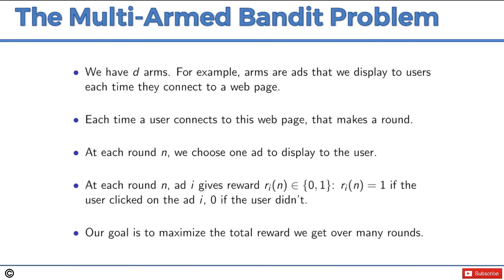A quick summary of the multi-armed bandit problem: we have d-arms. Arms are ads that we display to users each time they connect to a web page. A modern application of the multi-armed bandit problem is advertising — when you display ads, the algorithms we're applying can be used to solve that problem.